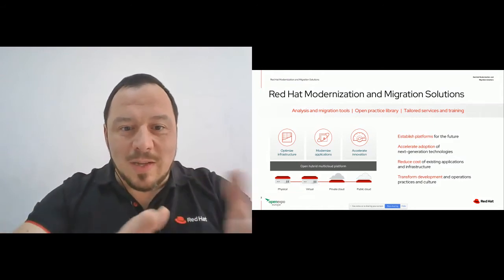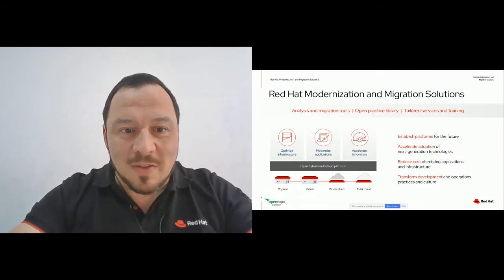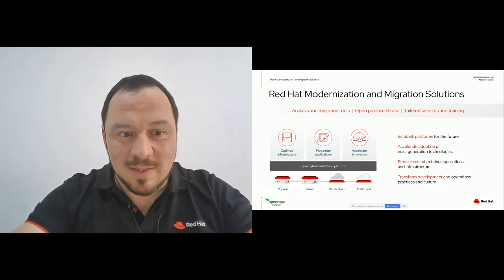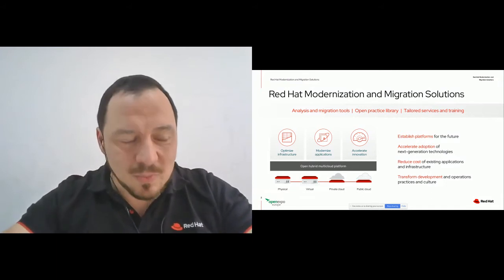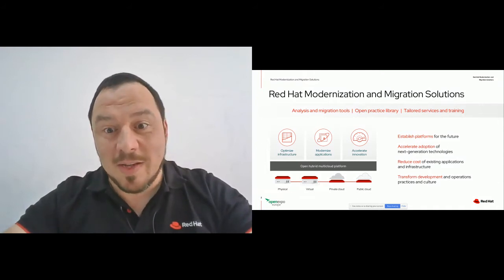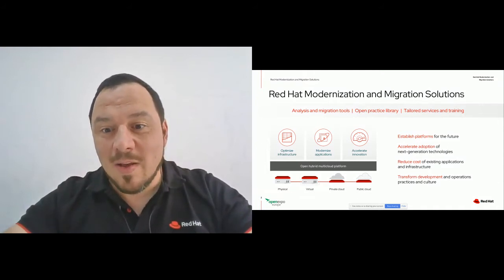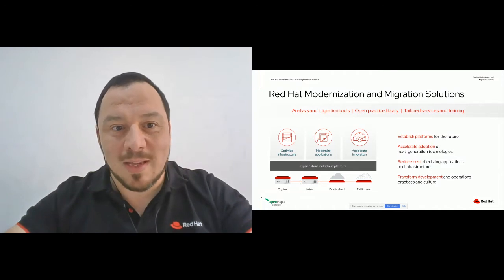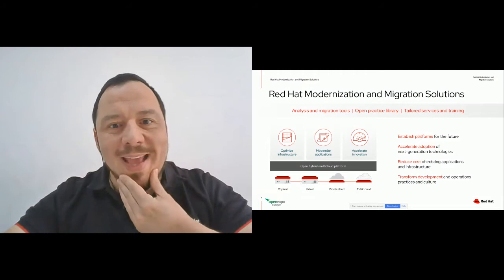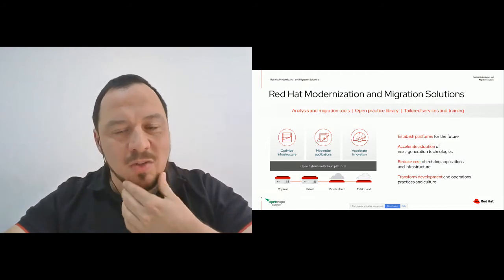How do we do it? There are several ways: one is optimizing the infrastructure, another is modernizing applications, and another is accelerating innovation by providing ways to transform how you're doing things. This is what my team does — modernization and migration solutions — and we have different approaches and different tools.